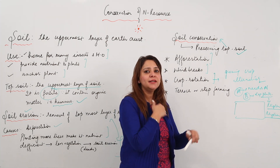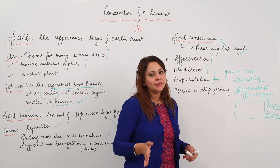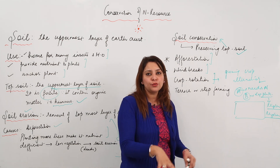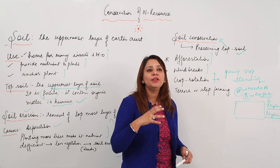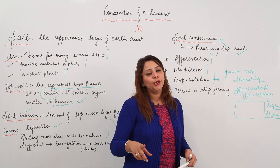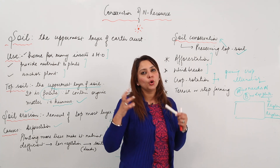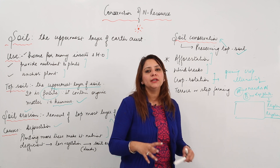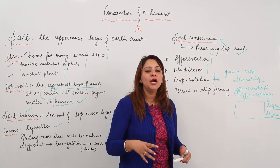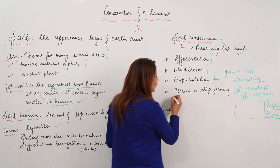When you first grow crop A, it reduces the nitrogen content. After harvesting, plant crop B — a leguminous plant — which doesn't require nitrogen but instead fixes nitrogen and adds it back to the soil. This increases the fertility of the soil. When the soil is fertile, plants grow there and hold the soil tightly, making it less prone to erosion.